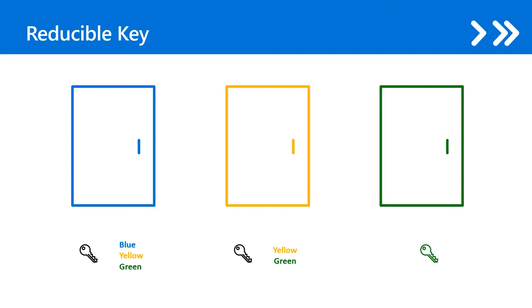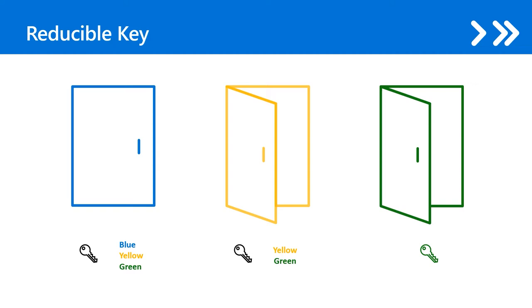The second scenario I want to introduce is reducible keys. This one is more complicated than the first. We will add two special keys in this scenario. The first black key is a master key that can open all the doors. The second black key is able to open the yellow and the green door. If you only need access to the second and the last door, what keys should you have? The answer is simple — the second black key.